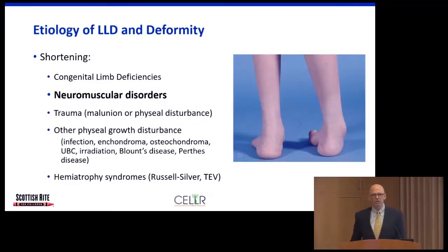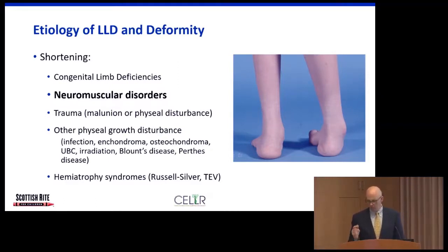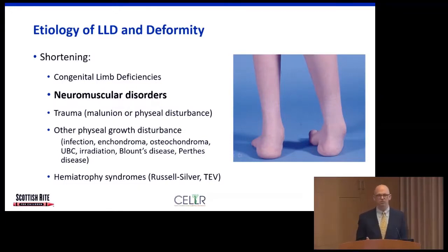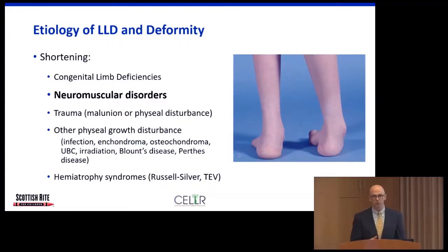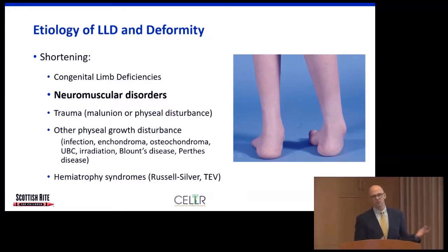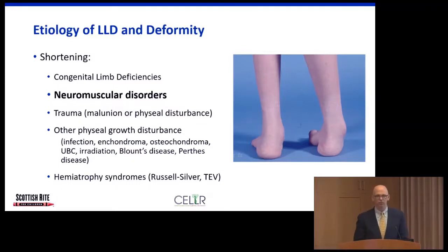The most common neuromuscular disorder presenting with limb length difference features a high-arched foot with a varus hindfoot — a cavovarus foot deformity. Unilaterally, this raises concern for a spinal cord etiology such as tethering. Bilaterally, we think of hereditary motor sensory conditions like Charcot-Marie-Tooth disease, especially if family members also have high arches or a prior diagnosis. A high index of suspicion is needed, as this will also cause leg length differences.